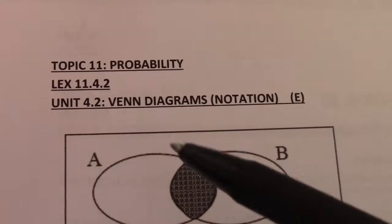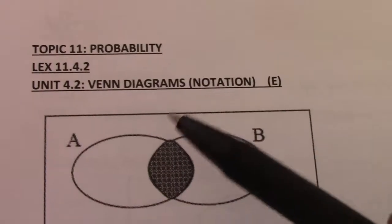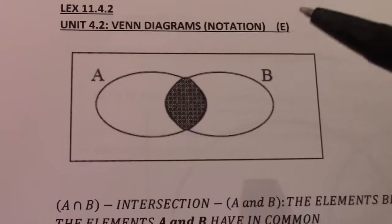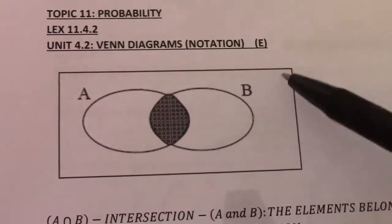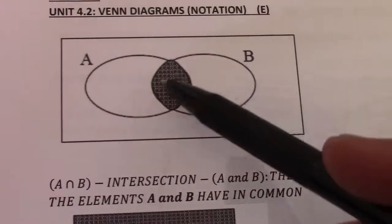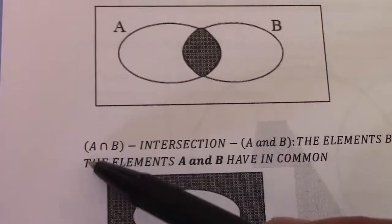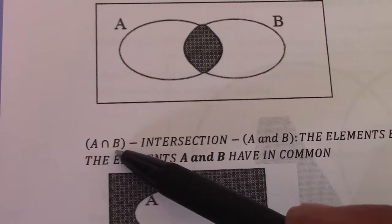Good day and welcome to Learning Exercise 11.4.2. Here we are getting used to the notation used with Venn diagrams and other probabilities. They have event A and event B. The highlighted circle section there is referred to as A intersection B.